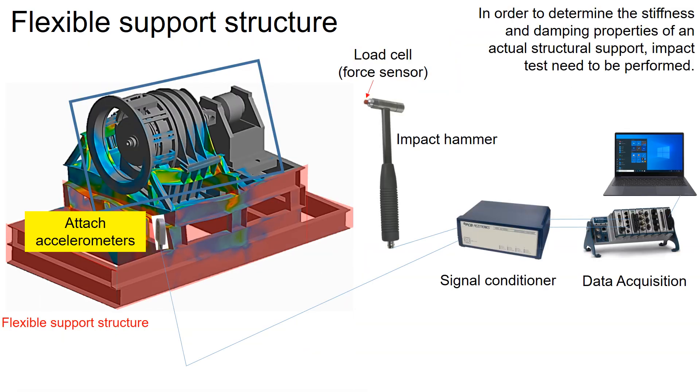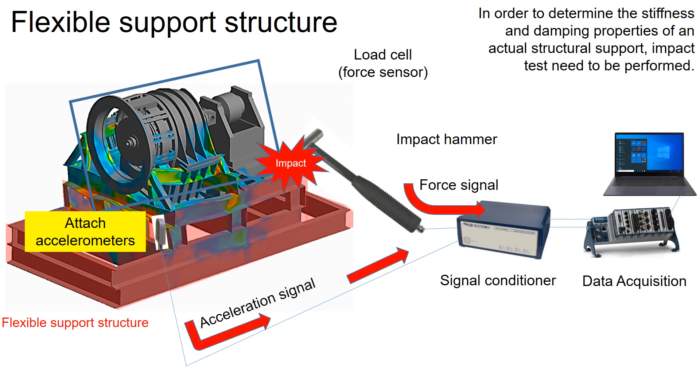To determine the stiffness and damping properties of actual structural support, we need to perform an impact test. During the test, force signal from the hammer and acceleration signal from the accelerometers are transferred to the data acquisition.